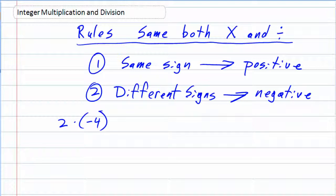So when I multiply different signs, I know that my answer is going to be negative. And since this is a multiplication of 2 and 4, our answer would be a negative 8. So signs are different. Our answer is negative.